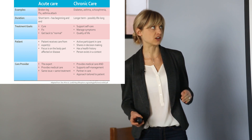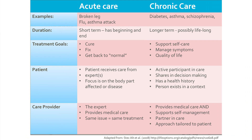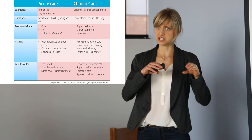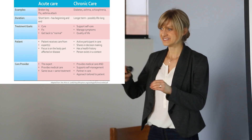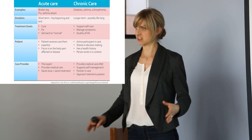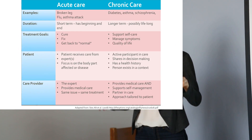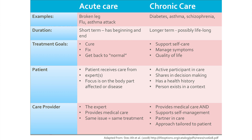I thought it would be useful to go through why the problems are different in specific aspects. So the examples of things you might have acute care for include a broken leg, a flu, and I put an asthma attack — because you can have an acute issue related to a chronic disease. A chronic disease might be asthma, but you might have an acute episode with an asthma attack. The duration is shorter-term with a beginning and end when it's acute.